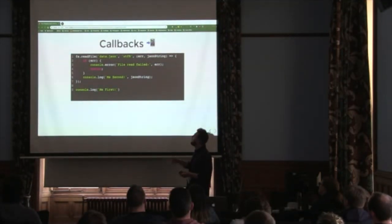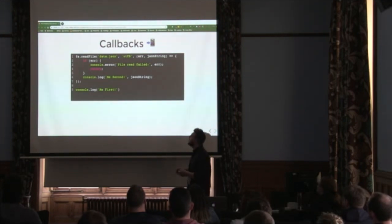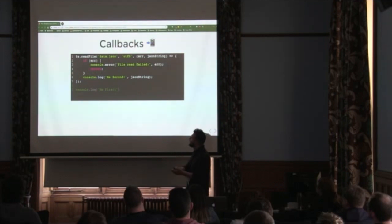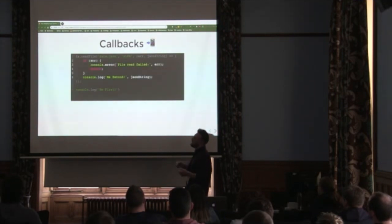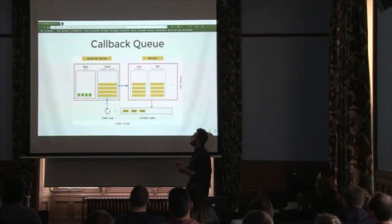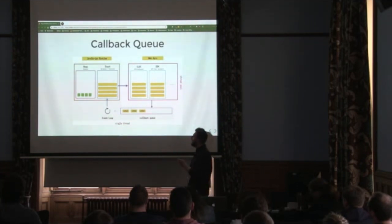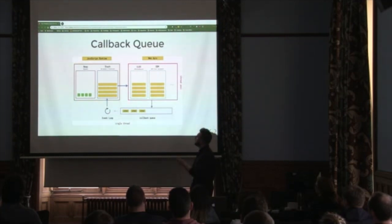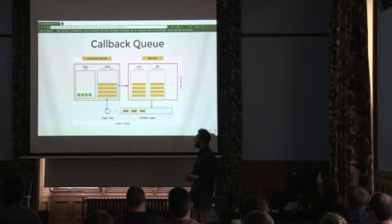Here's a Node script that reads from a file. We define a callback at the end and say, when this file has finished reading, run the callback. It's easy to think this whole thing runs before hitting the next line, but that's not the case. All we're saying is: when this is done, run the function. It then moves on and console.logs 'me first', the execution stack empties, and then the callback gets run. When a web API task is done, it pops the function onto a callback queue, and once the main stack is empty, the event loop puts it onto the main call stack and executes it.